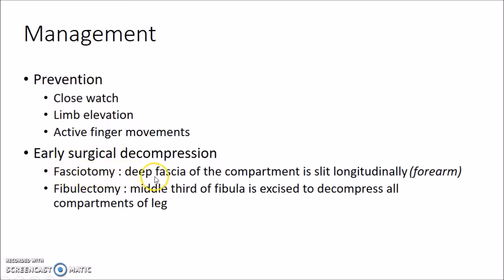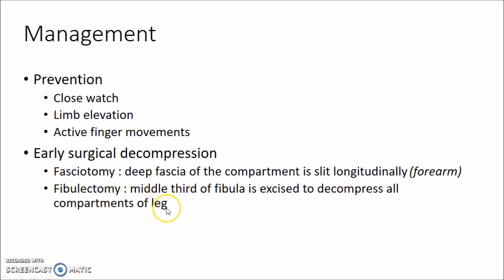In fasciotomy, the deep fascia of the compartment is slit longitudinally and the compartment pressure is brought down. This can be done in case of Compartment Syndrome of the forearm. Early surgical decompression can also be done by fibulectomy, in which the middle third of the fibula is excised to decompress all compartments of the leg — used in case of Compartment Syndrome of the leg.